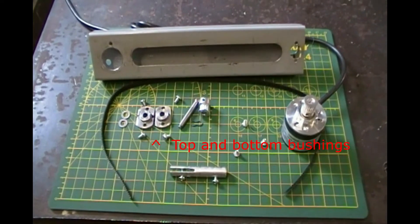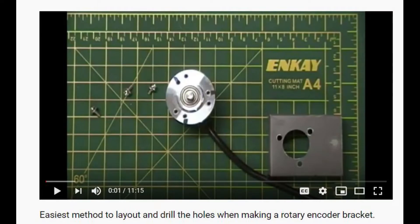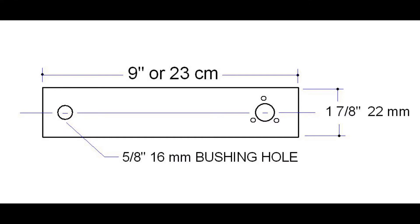I liberated my steel channel from a satellite dish. I cut the channel to length, then drilled mounting holes for my rotary encoder. I have an easy method of laying out encoder mounting holes that I demonstrated in an earlier video.